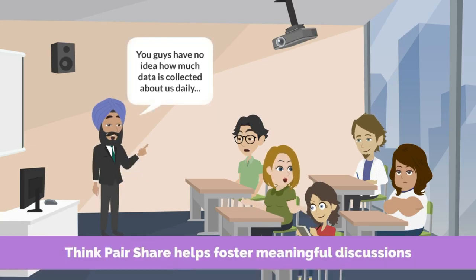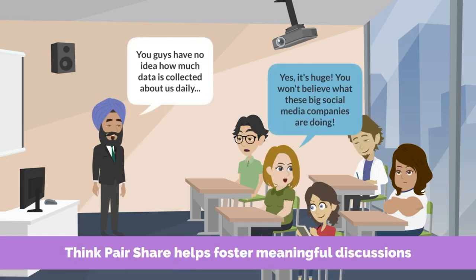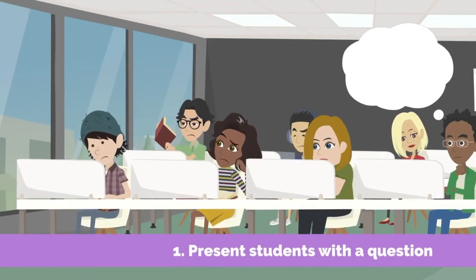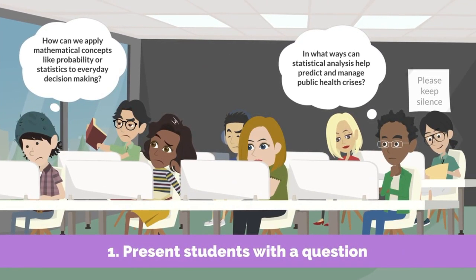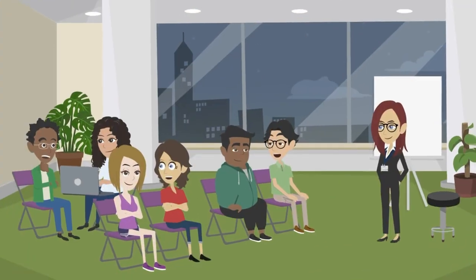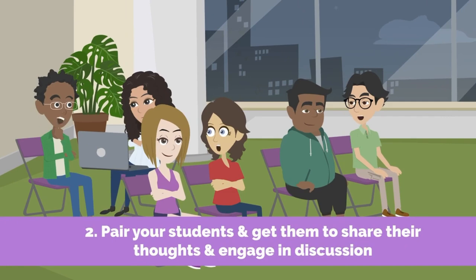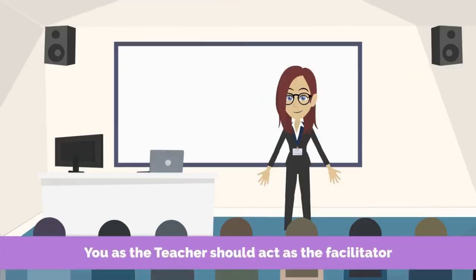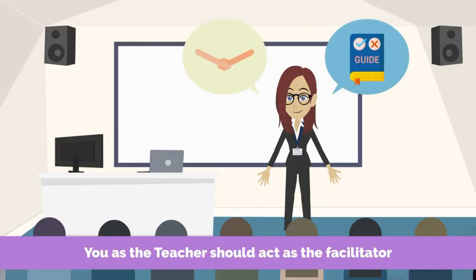The think-pair-share method is a powerful strategy to enhance student engagement and foster meaningful discussion in the classroom. Here's how it works. First, think: students are presented with a thought-provoking question or prompt related to the lesson, and they take a moment to individually reflect on their thoughts and ideas. Second, pair: students pair up with a partner, share their thoughts and engage in discussion, actively listening to each other's perspectives. Third, share: pairs share their ideas with the entire class — students volunteer to share their insights, or the teacher may call on pairs to present. Throughout the process, the teacher facilitates the discussion, providing guidance and support as needed.